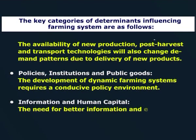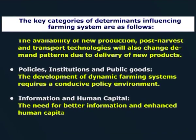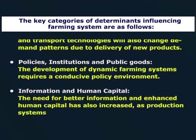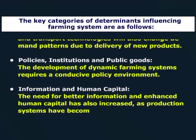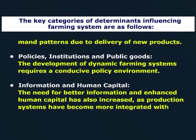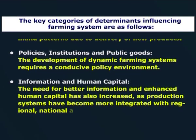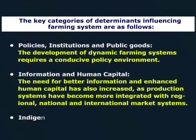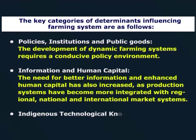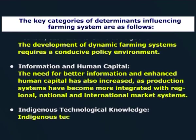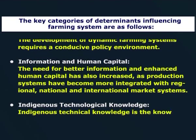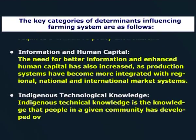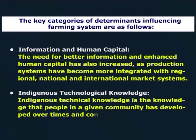Number five is information and human capital. The need for better information and enhanced human capital has also increased as production systems have become more integrated with regional, national, and international market systems. Number six is indigenous technological knowledge. Indigenous technical knowledge is the knowledge that people in a given community have developed over time and continue to develop.